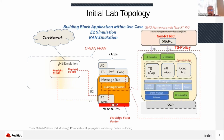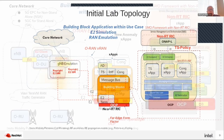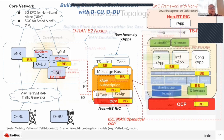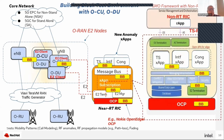To the right we're just zooming in a bit. As we migrate over time, we'll have an actual gNodeB in the lab — OCU and ODU with E2 clients that support the use cases of interest for telcos. The near real-time RIC remains in the middle running on OCP, and we can see modules like the E2 Terminator and E2 Manager, with building blocks distributed throughout, including on the E2 clients, the near real-time RIC, OCP, and so on.